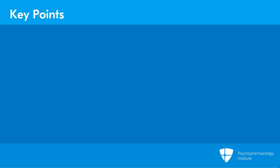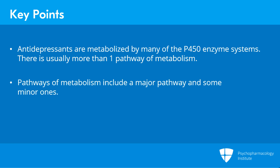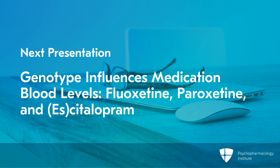The key points in this section are that antidepressants are metabolized by many of the P450 enzyme systems. There is usually more than one pathway of metabolism, typically consisting of a major pathway and some minor ones. There is data supporting that polymorphisms affect the blood levels of medications.